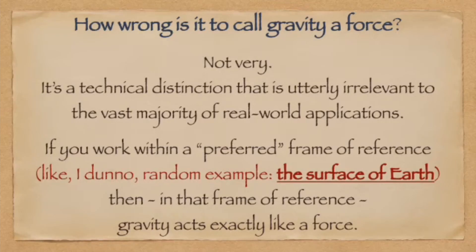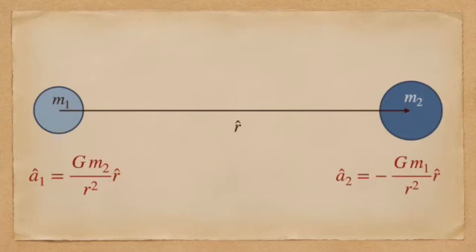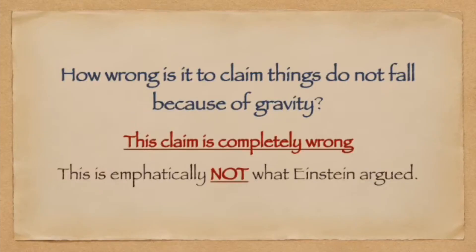It's a simple pedantic quibble that flat earthers use without understanding. For an observer on Earth's surface with no interest in theoretical physics, there is no meaningful distinction between the Newtonian and the Einsteinian approximations. Einstein himself was particularly careful to make sure his theory coincided with Newtonian theory in this setting. How wrong is it to claim that it is not gravity that causes things to fall? That is completely erroneous and a grotesque perversion of what Einstein himself argued. This interpretation is not supported by a single scientific organization, scientific faculty, reputable scientific journal, or sane professional scientist on the face of the planet — and the reason for that is it's just plain wrong.